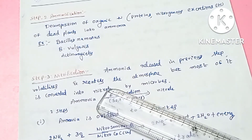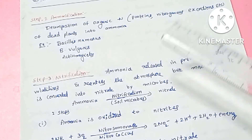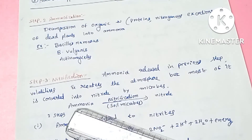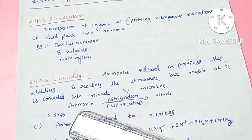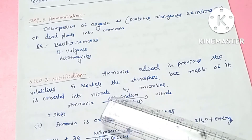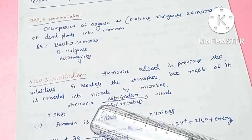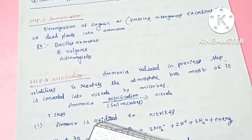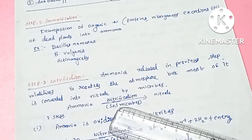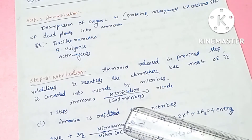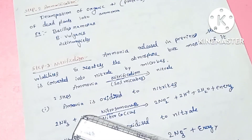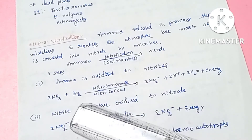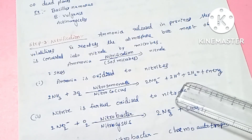The next concept is Nitrification. Nitrification is the conversion of ammonia to nitrate. Ammonia is actually in a volatile form and can enter the atmosphere. However, ammonia is converted into nitrate form through nitrification. This is done by soil microorganisms. The conversion of ammonia to nitrate is a two-step process. First, ammonia is oxidized, releasing energy and water.